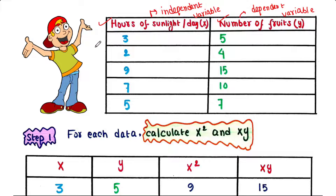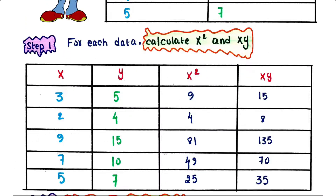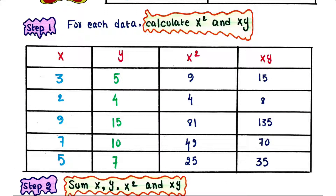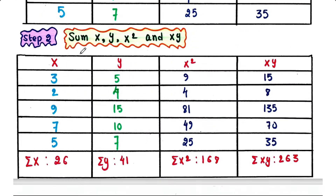We have the data here. Step 1 is to calculate x² and xy for each data point. We have calculated x² and xy for each of these data. Step 2 is to sum x, y, x², and xy, so we will get summation of x, summation of y, summation of x², and summation of xy.